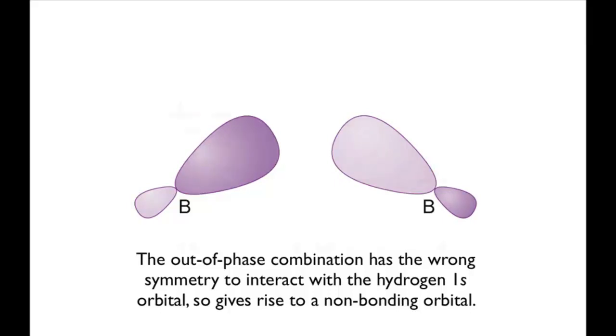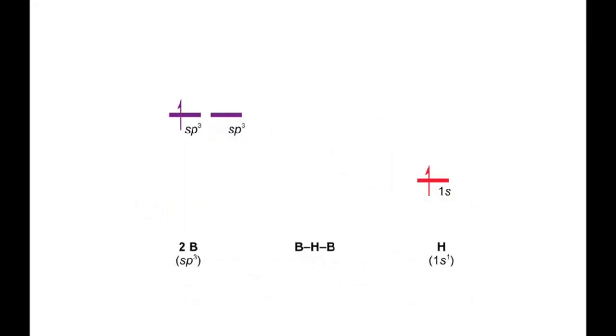You can show this on a partial molecular orbital energy level diagram. Hydrogen is more electronegative than boron, so the hydrogen 1s orbital is lower in energy than the boron hybrid orbitals.